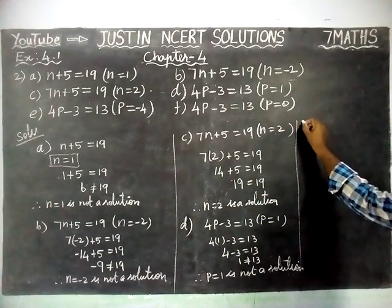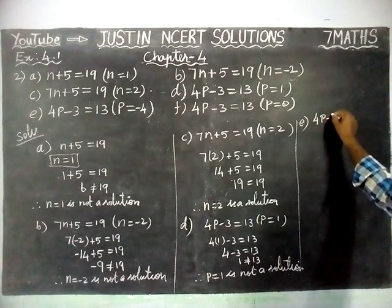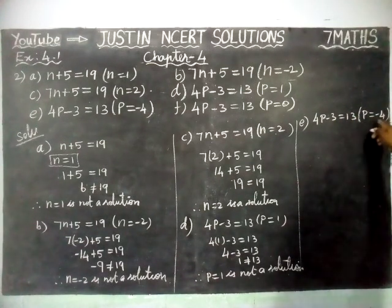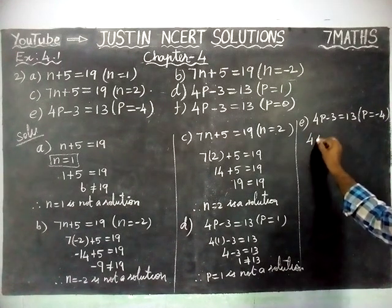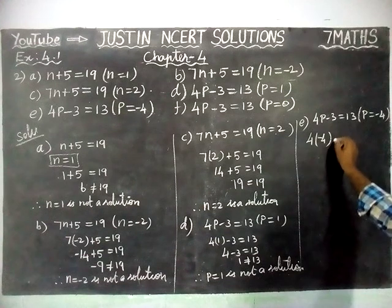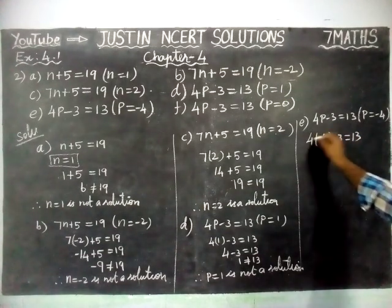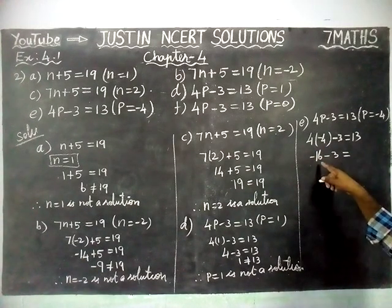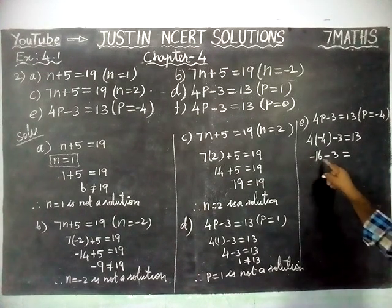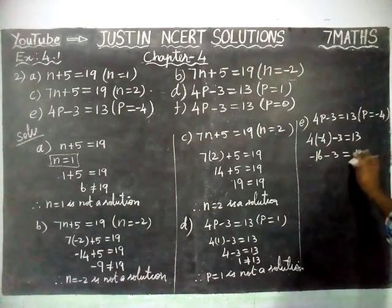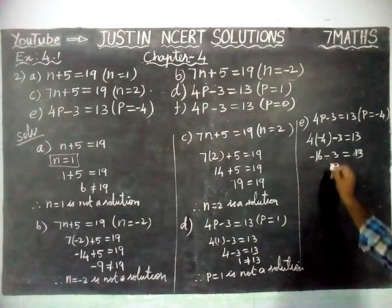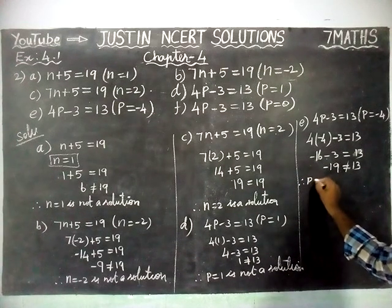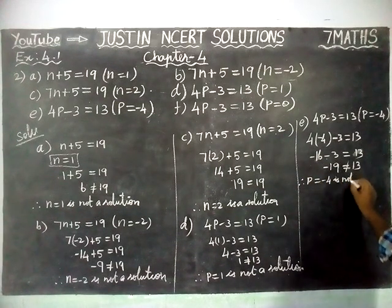Next, we are going to solve option E: 4P minus 3 is equal to 13, where P is equal to minus 4. Substituting: 4 into minus 4 minus 3 is equal to 13. 4 times 4 is 16, and plus into minus gives minus, so minus 16 minus 3. Both have the same sign, so we add: 16 plus 3 is 19, giving minus 19. Minus 19 is not equal to 13. Therefore, P equal to minus 4 is not a solution.